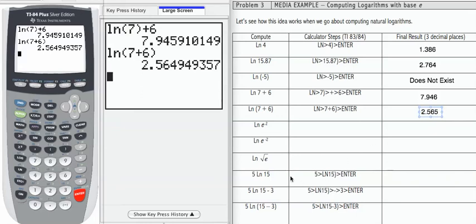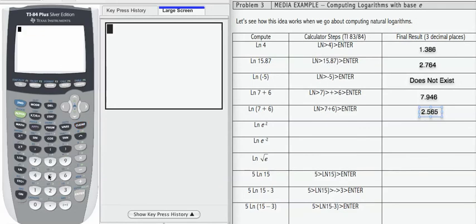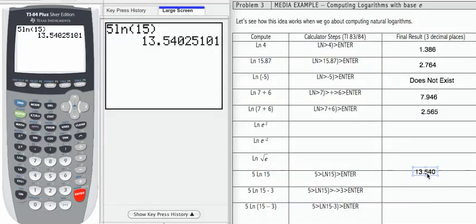Now I'm going to do these last three and then come back to the ones that have some pieces missing. 5 natural log of 15. 5 natural log 15 in the parentheses, enter, gives me 13.540.